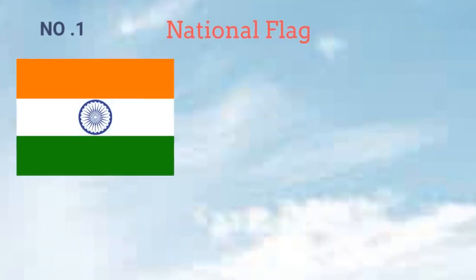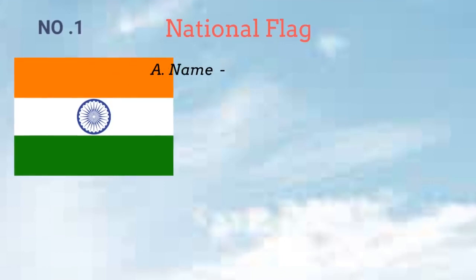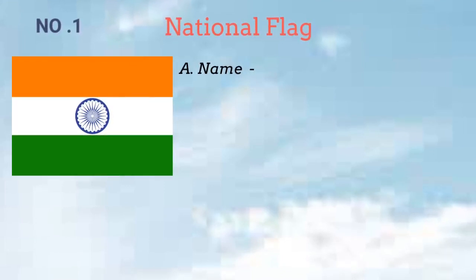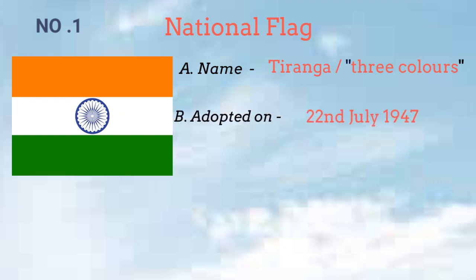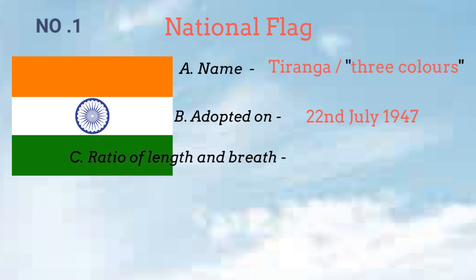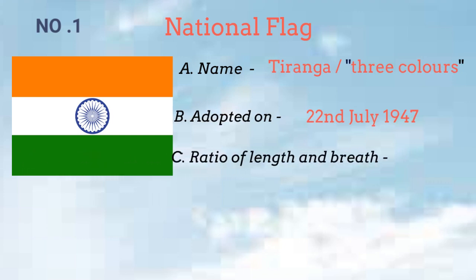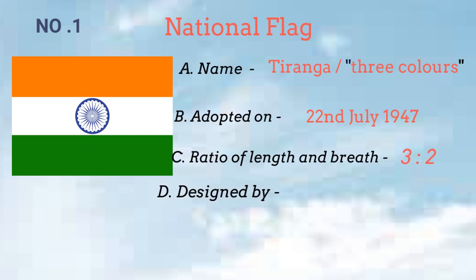Number 1. Let's talk about our national flag. Our national flag is called Tiranga, which means three colors. It was adopted on July 22, 1947. The ratio of length and breadth is 3 to 2. Our national flag was designed by Pingali Venkaiah.